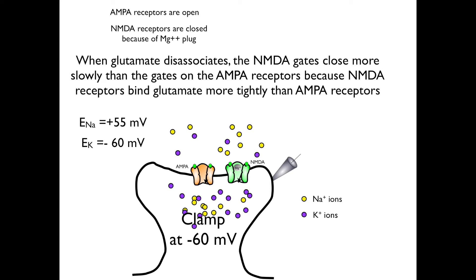When glutamate dissociates, the NMDA gates close more slowly than the gates on the AMPA receptors, because NMDA receptors bind glutamate more tightly than do AMPA receptors. First the AMPA gate closes, a moment later glutamate dissociates from the NMDA receptor and the NMDA gate closes. The inward sodium current is shown as the blue line on the right. This trace is the current that flowed only through the AMPA receptors while they were open. No current could flow through the NMDA receptors because the pore was plugged by the magnesium ion.